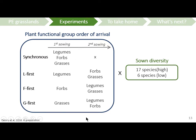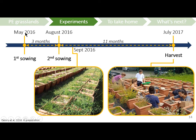In this mesocosm experiment, we manipulated the functional group order of arrival again, using exactly the same levels as in Jülich, though with different species. We also had a species diversity treatment with two levels — high or low diversity — and all factors were crossed. The experiment lasted just over one year. We set it up in May 2016, when we did the first sowing of the functional group arriving first. Three months later, we sowed the remaining functional groups, and 11 months after the second sowing we harvested the experiment.